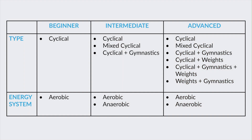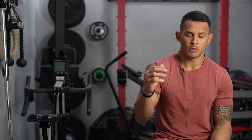Moving on to the intermediate: the intermediate gets cyclical mixed — cyclical plus cyclical and gymnastics — in terms of FME types. In terms of energy systems, they can start dosing anaerobics. They can practice, train, and test the anaerobic system through FMEs, as well as aerobic of course.